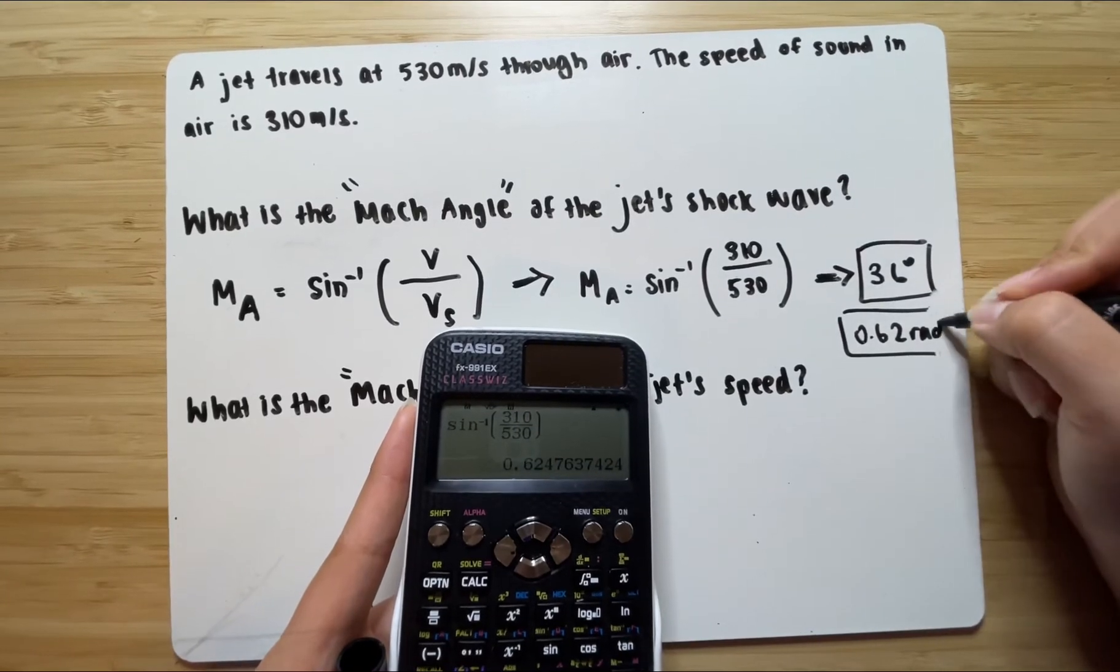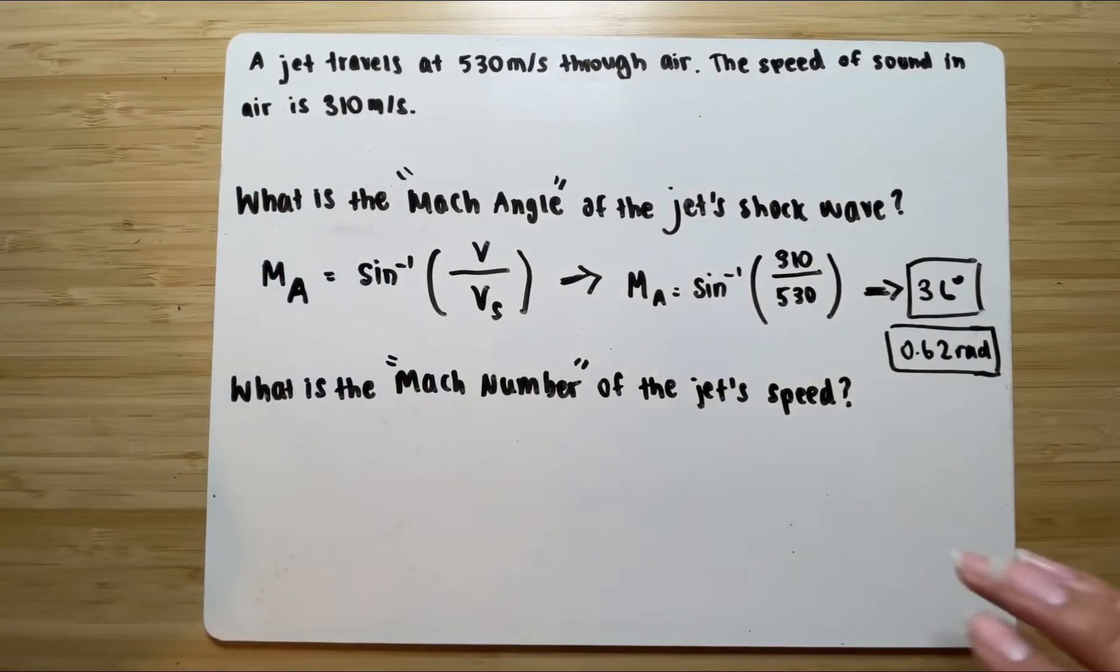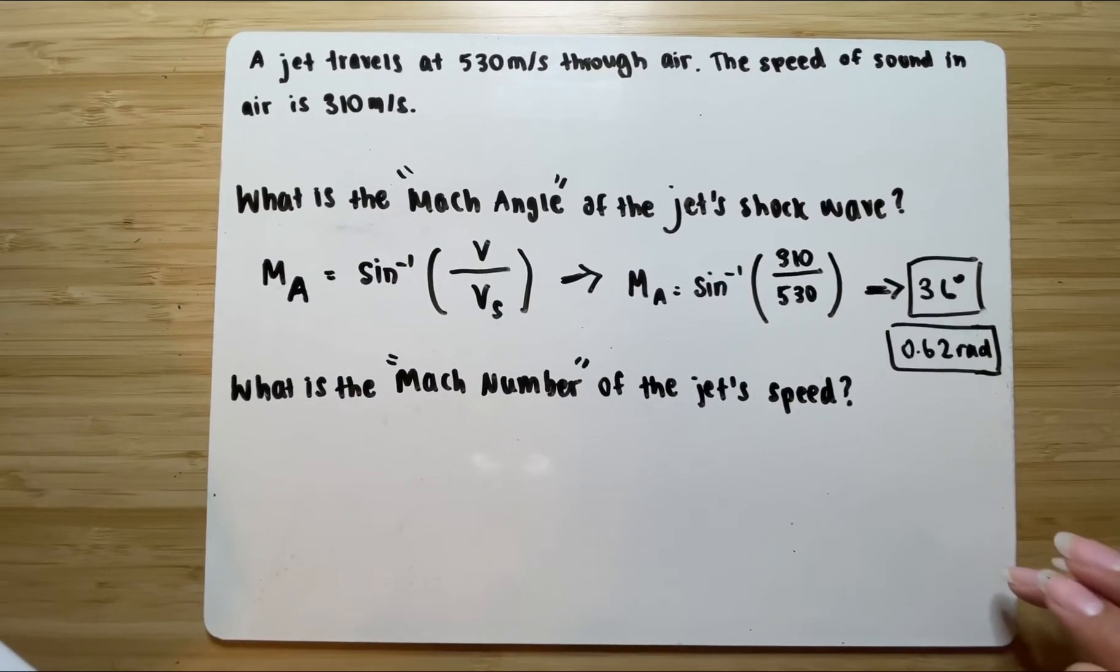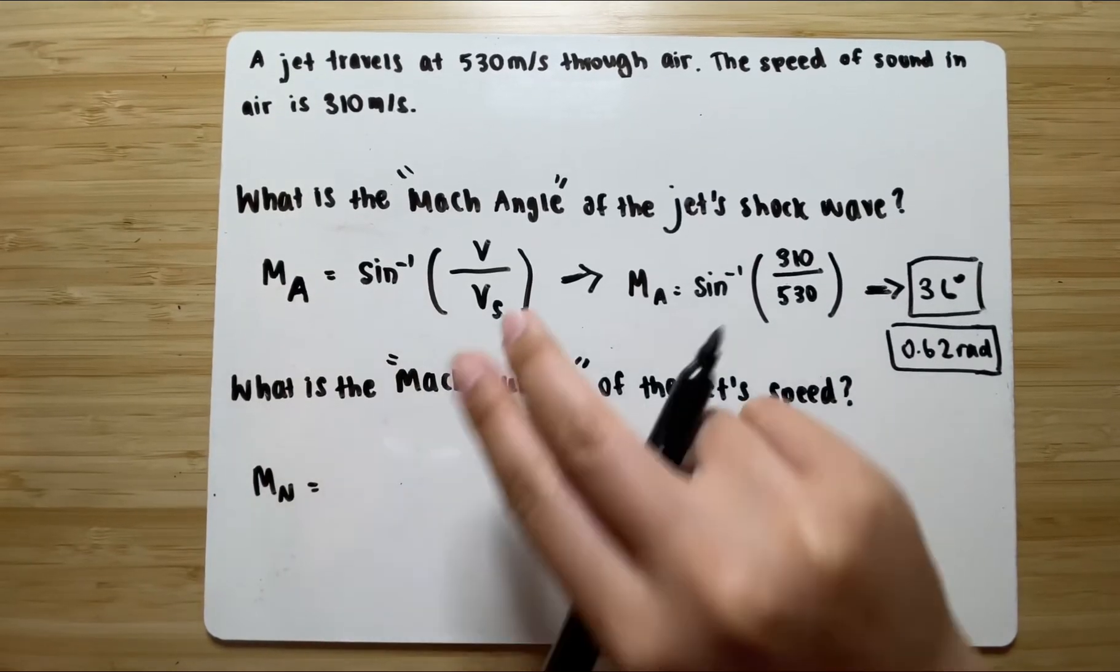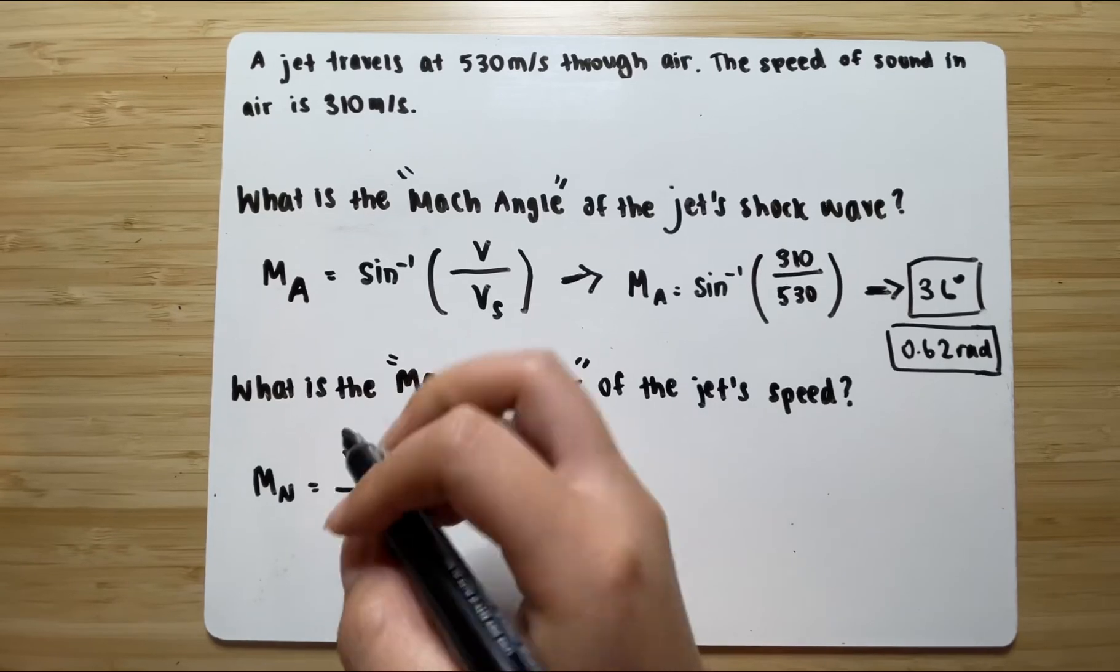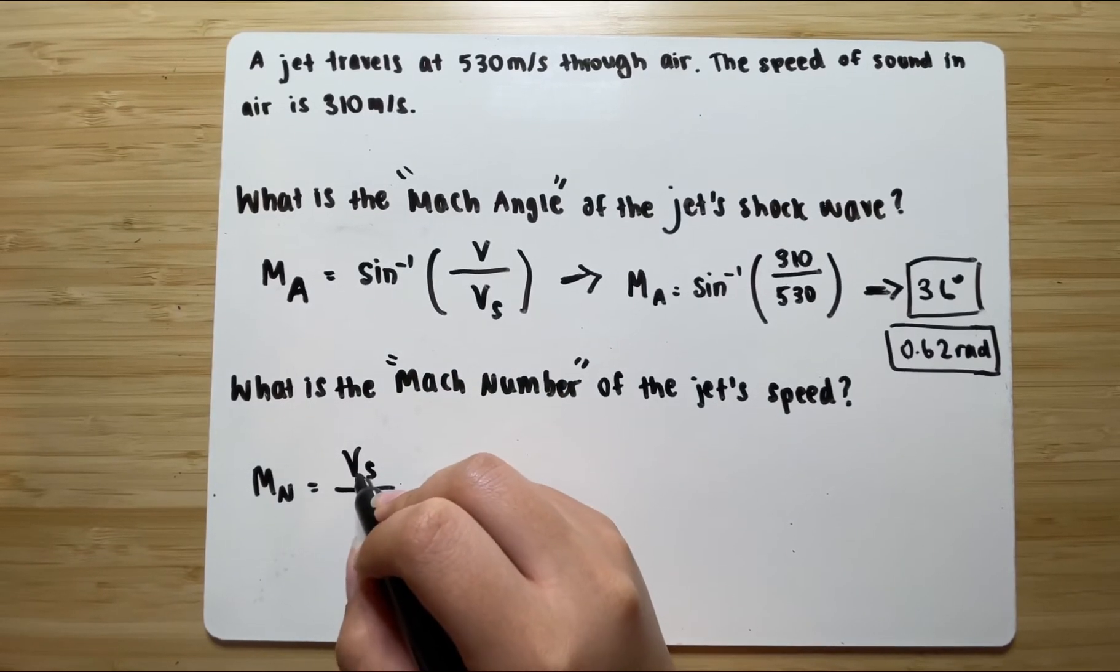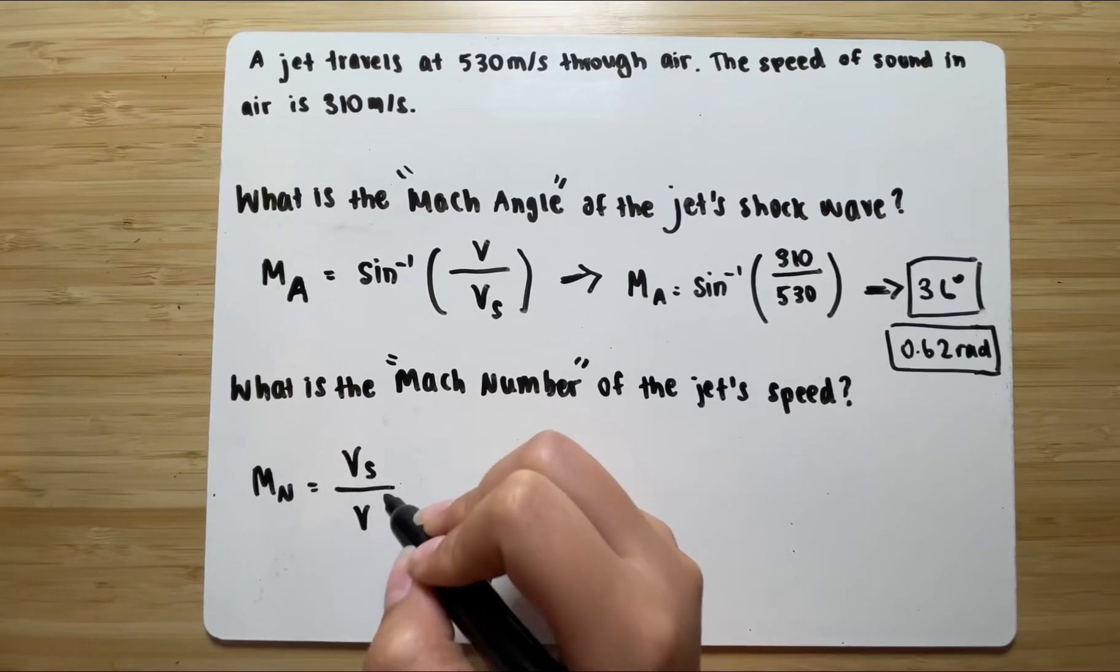All right, moving on. Let's find the Mach number. To find the Mach number of the jet's speed, the formula is the flip of that. So it will be the velocity of the source, which is the speed of the jet, over the velocity of the sound.